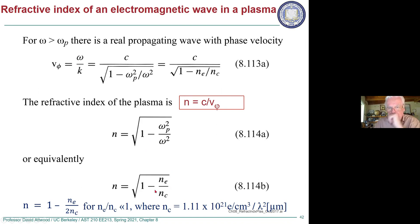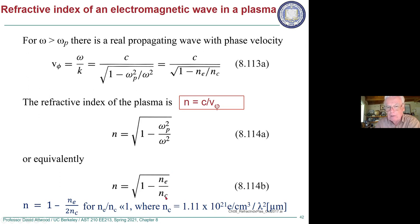In the case where the electron density is well below the critical — as would be the case for high harmonics, where the electron densities are not nearly equal to the critical density for Ti:sapphire — if this ratio is small, the square root is approximately one minus one-half of n_e over n_critical.